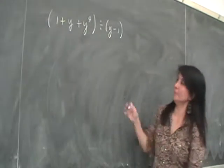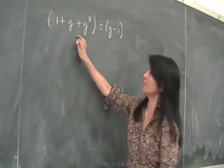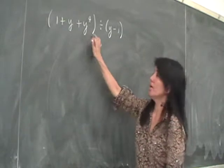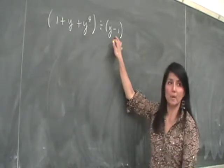Supposing we have this division problem, we have the dividend is 1 plus y plus y to the 4th, the divisor is y minus 1.